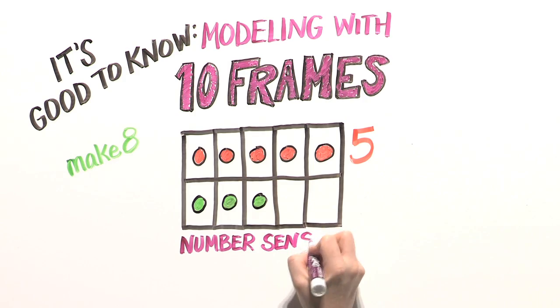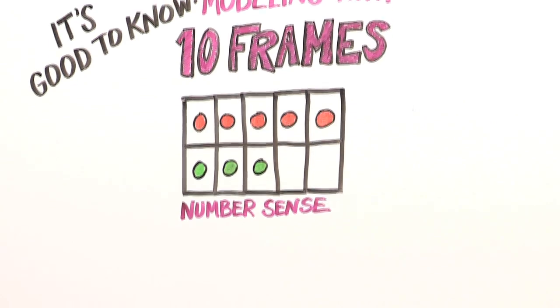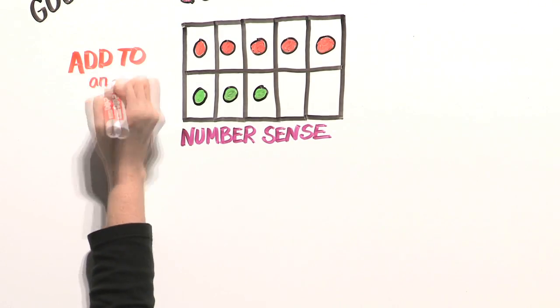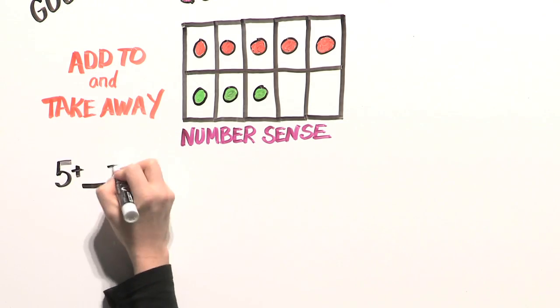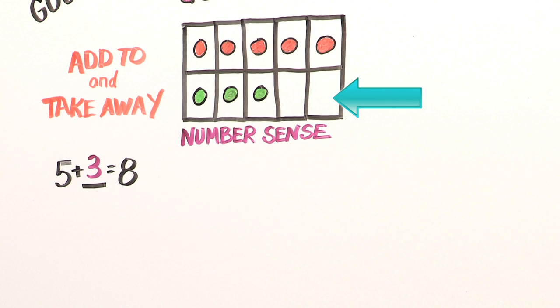look at all the number sense your child can pull from this tool. He can use visuals to add and take away. For example, how many do you add to 5 to make 8? What is 8 take away 4?